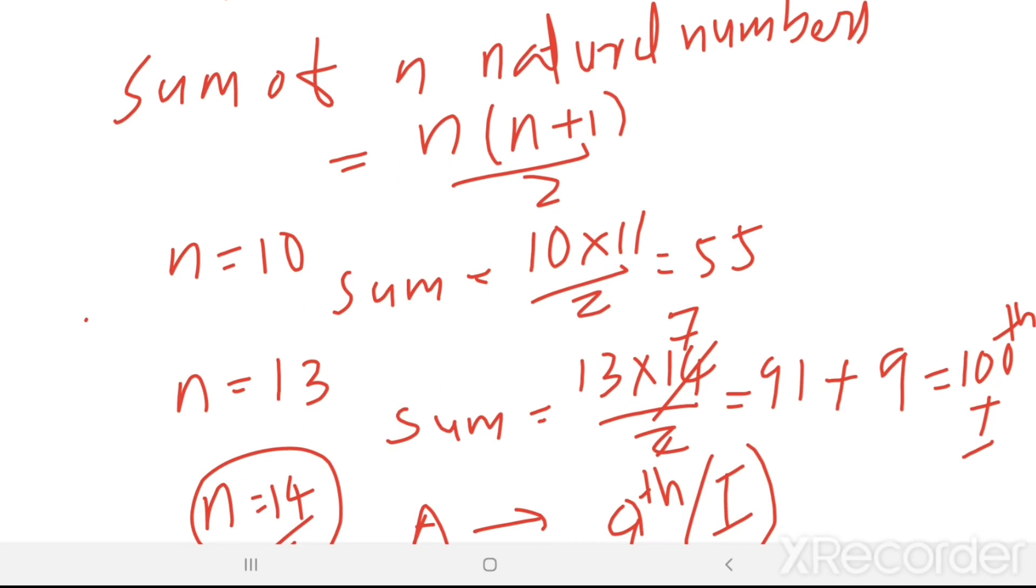So from here, first you found n equal to 10 equal to 55. Then in the next group it will be 11. So this is 66. Then again 12. Then this is 78. Then plus 13. So this is 91. This way also you can find. Then in the next group, there will be 14. So we need only 9. The 9th letter is I.